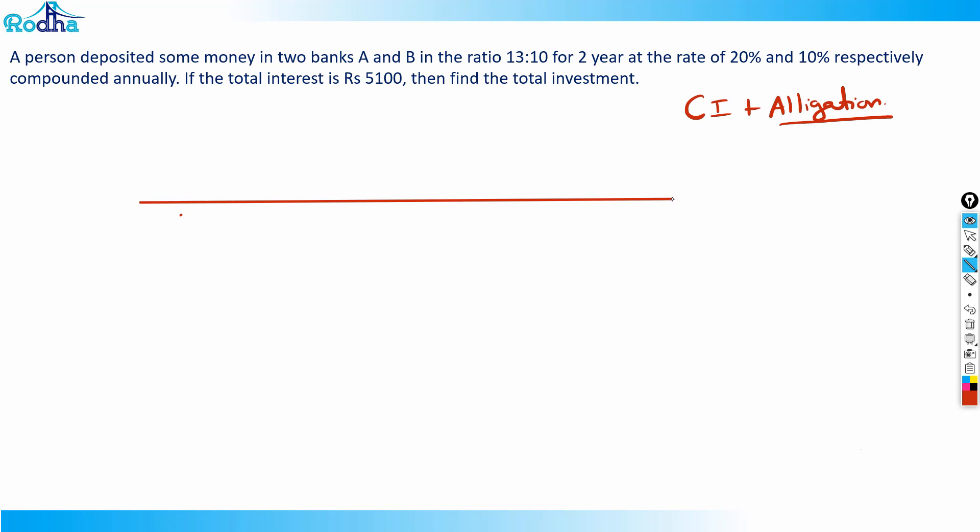If the total interest is 5100, let me draw a quick seesaw here. This is the same allegation method I showed in previous videos. It's a part of allegation but not exactly the standard approach. Those who are new can refer to allegation videos in the arithmetic section. So banks A and B have a ratio of 13:10 at rates of 20% and 10%—this is compound interest.